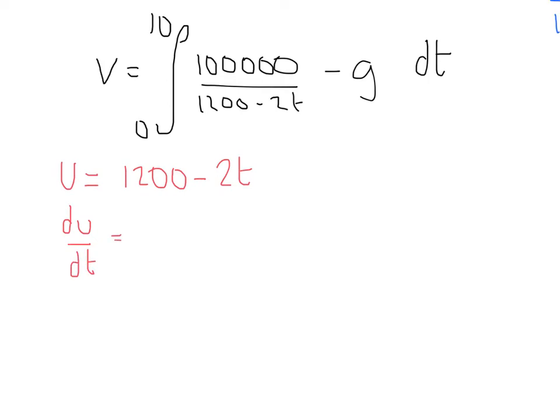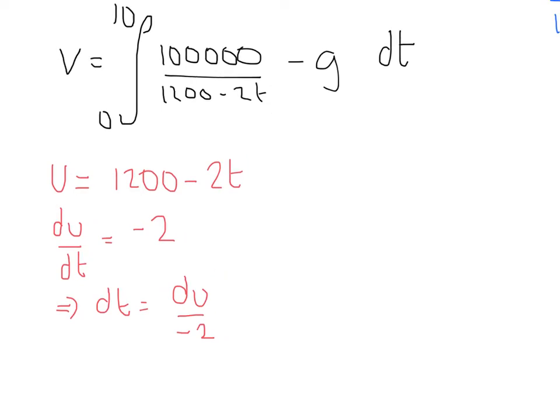So du by dt is equal to just minus 2 in this case, which means dt is equal to du divided by minus 2. So when we want to swap in that, basically, we're going to have to put in this part over here because we know that that's equal to dt. And what we're also going to have to do is we're going to have to calculate what the new limits are because, obviously, those are in terms of t. So when t equals 10, u is going to be 1,200 minus 2t, so 1,200 minus 20, that's going to be 1,180. And when t equals 0, u is going to be 1,200.